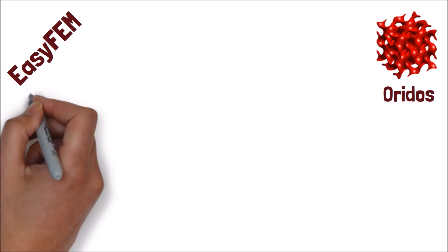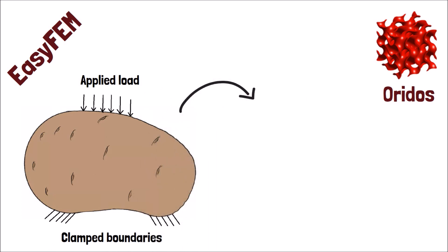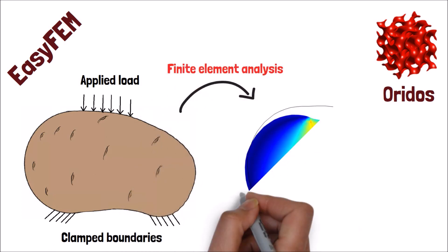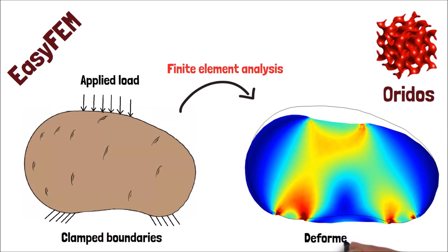For example, for a given continuous body like a potato, I want to apply a load, fix some boundaries, and use the finite element method to see the mechanical deformation of this potato. The main question is, how to go from an undeformed shape to a deformed one like this.